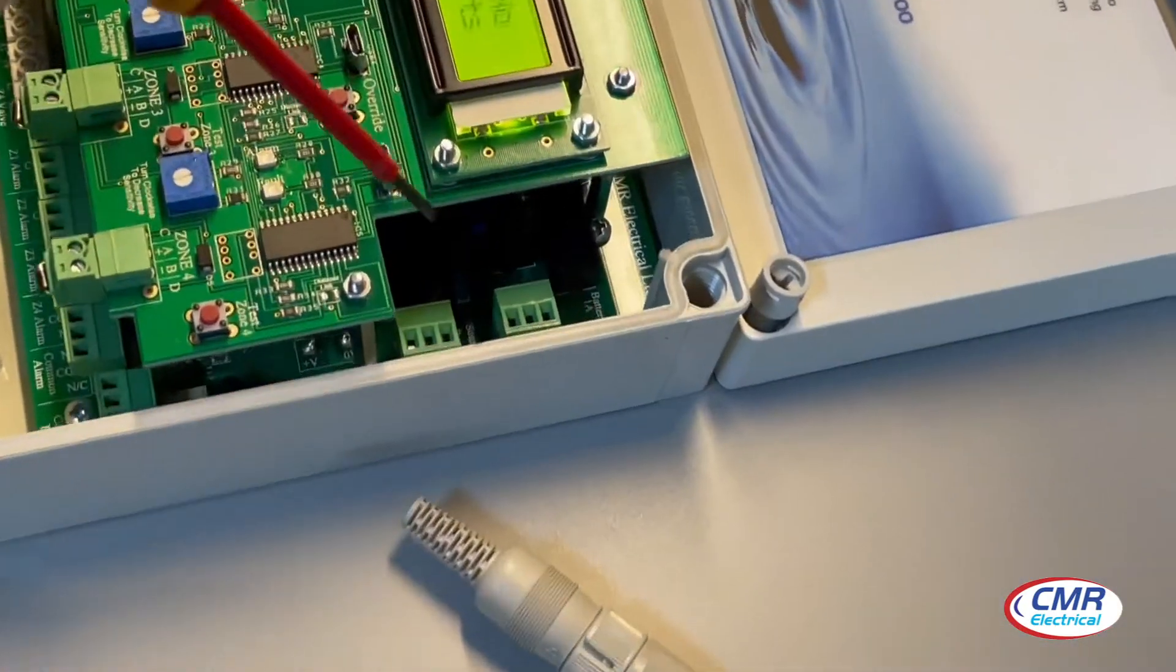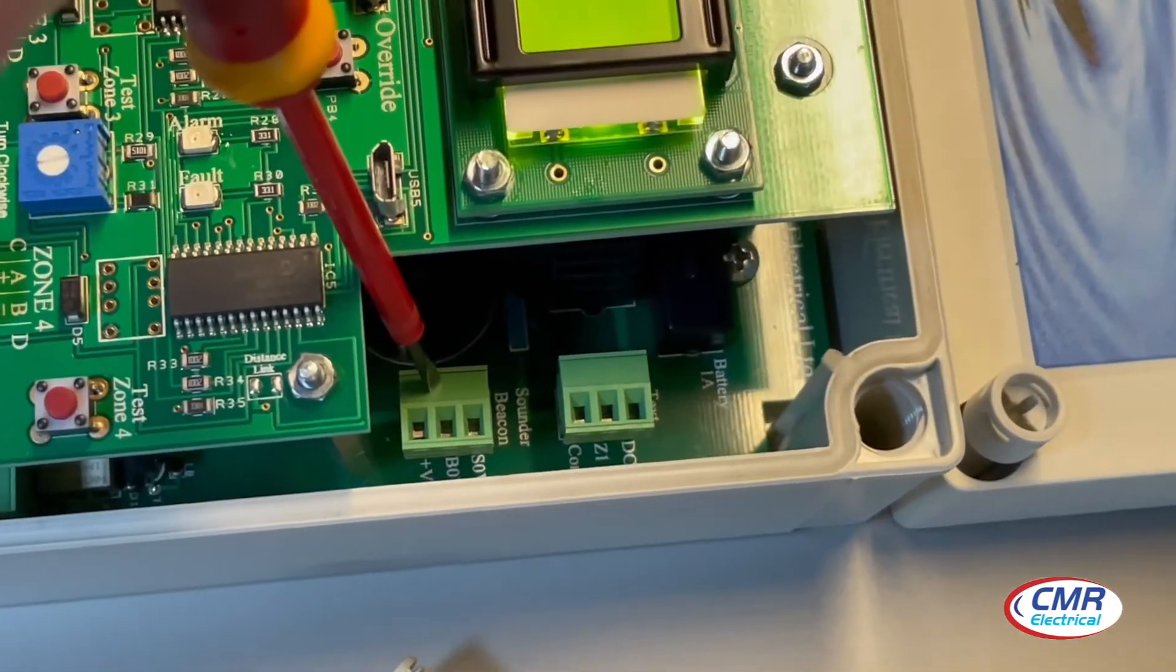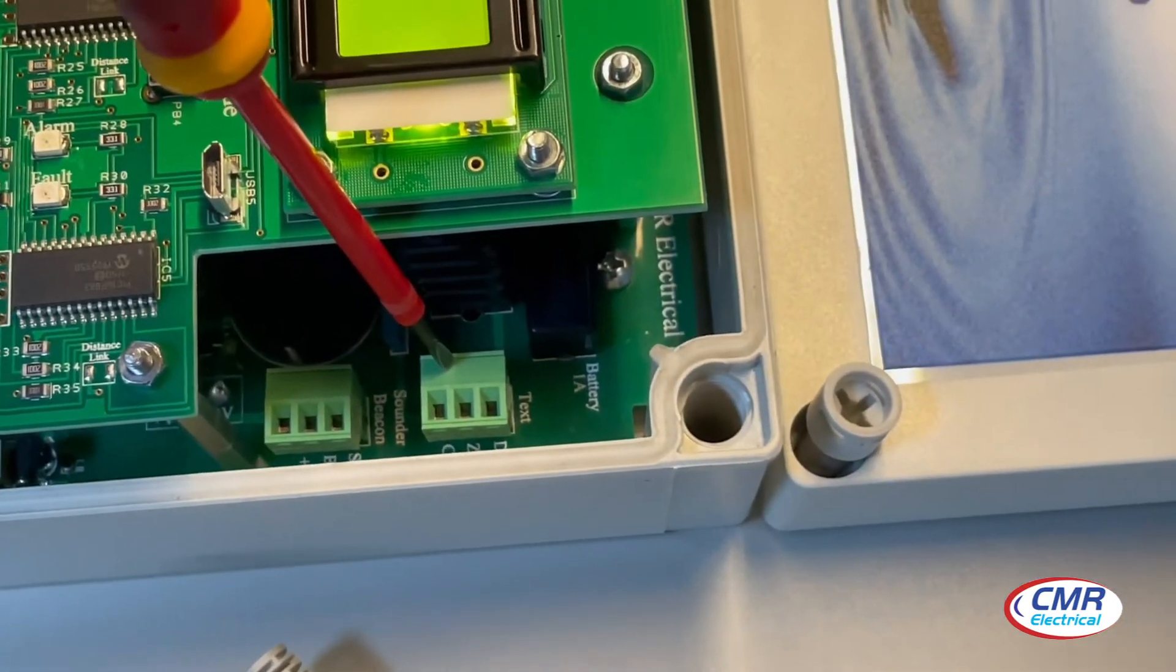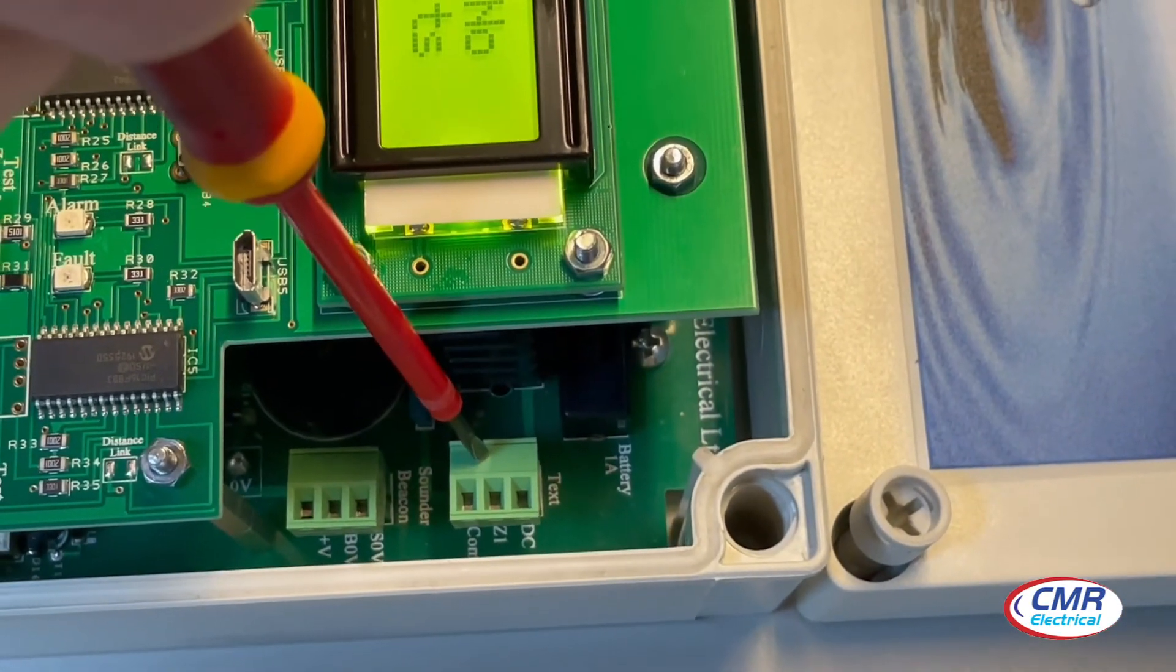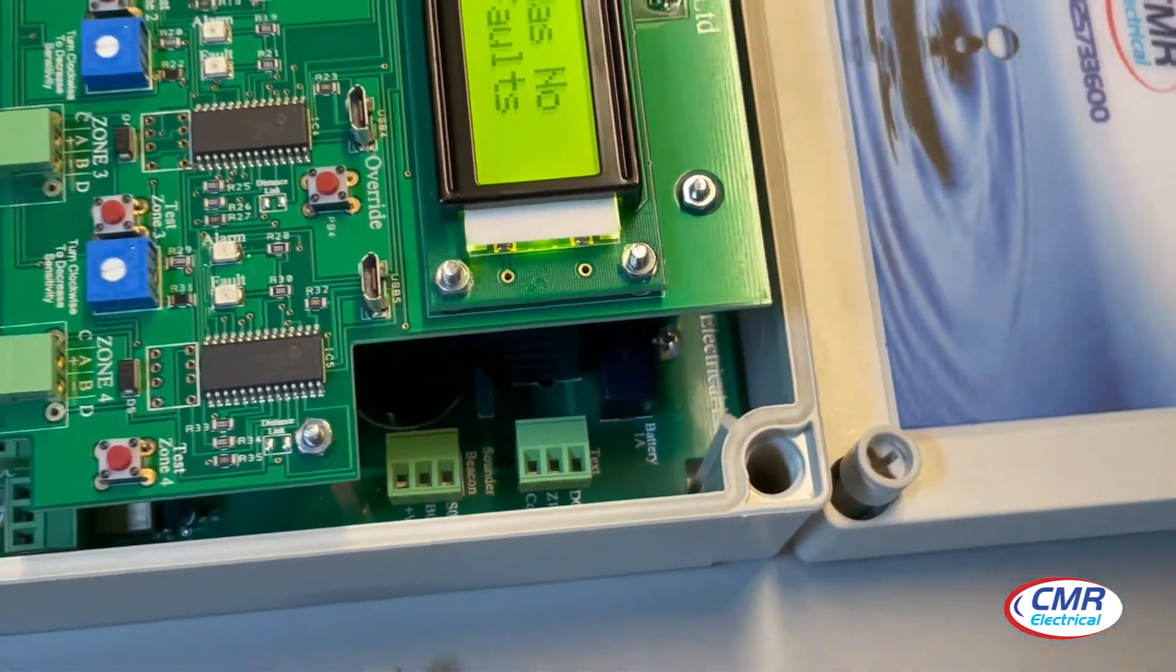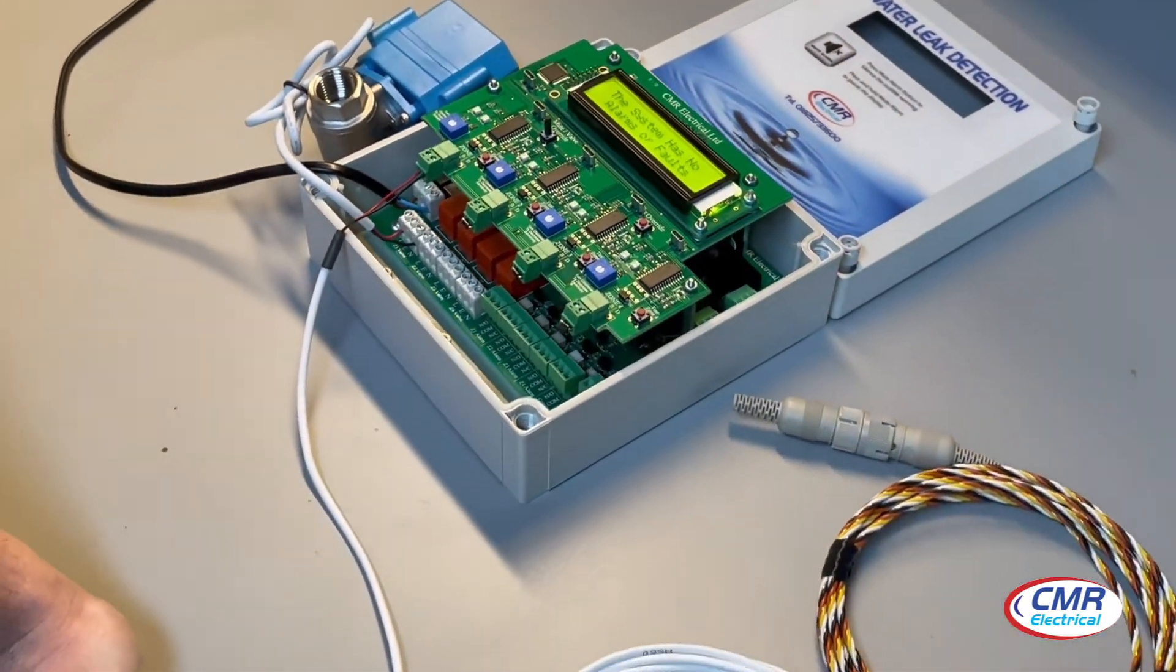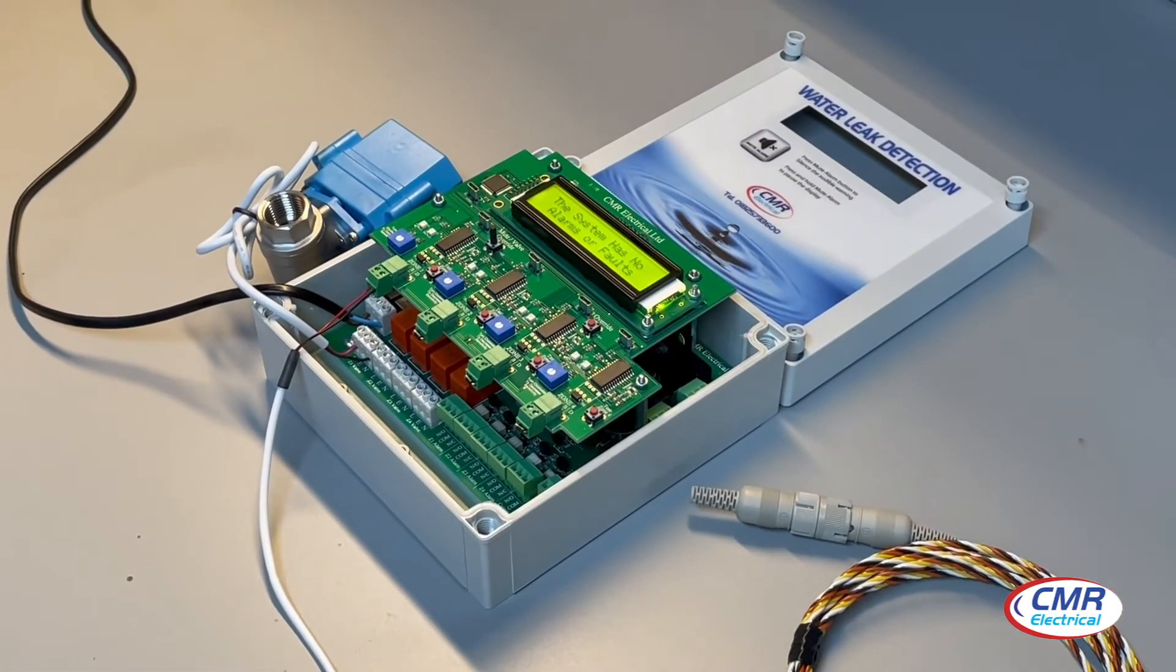Moving around here, we have the sounder beacon terminals, allowing you to fit a beacon. And next to this, a set of terminals, so if you want to put a text messaging system—a three user text messaging system or a more complicated 100 user text message stroke email system—you can do.